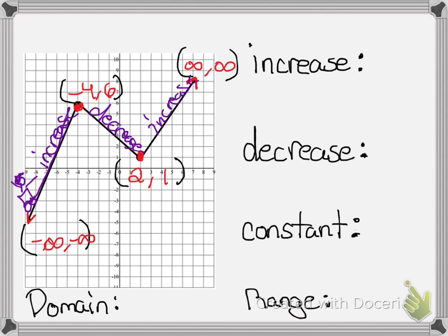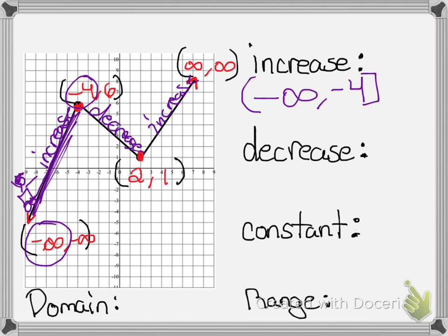So when it says what are the intervals of increase: since I'm increasing here, I'm going to be going from negative infinity to negative 4 — you always focus on the x values. Put parentheses next to your infinities, brackets next to your number. I'm also increasing right here, so that's going to go from 2 to infinity.